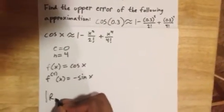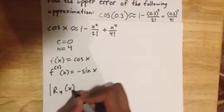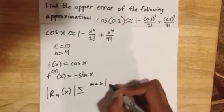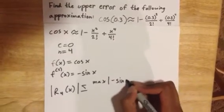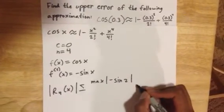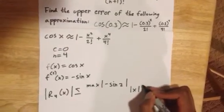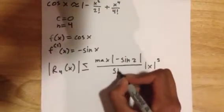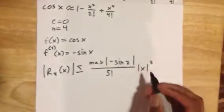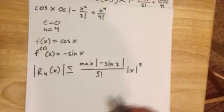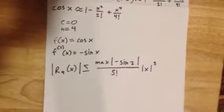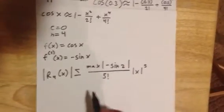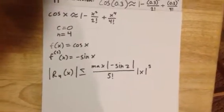As we write everything into our formula, we should be able to find everything we need. Here, z is a number that would maximize |-sin(z)|, the absolute value of negative sine of z. And z has to be between the center of our approximation and what we are actually approximating.